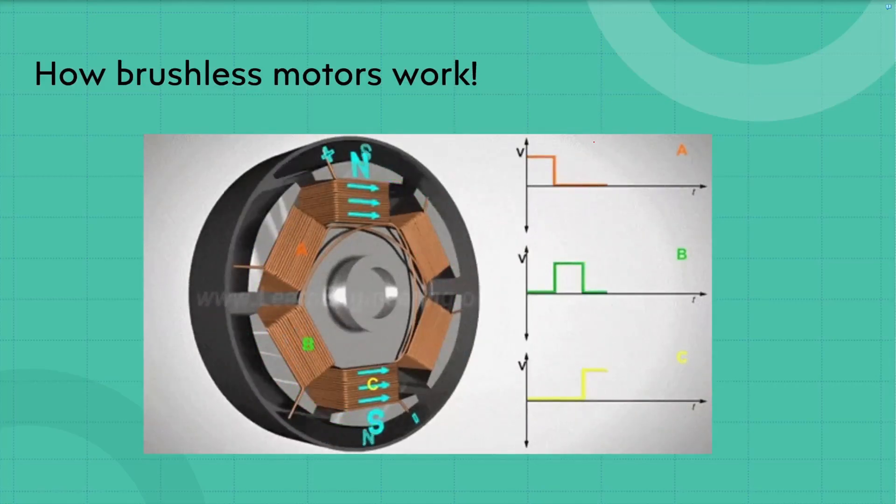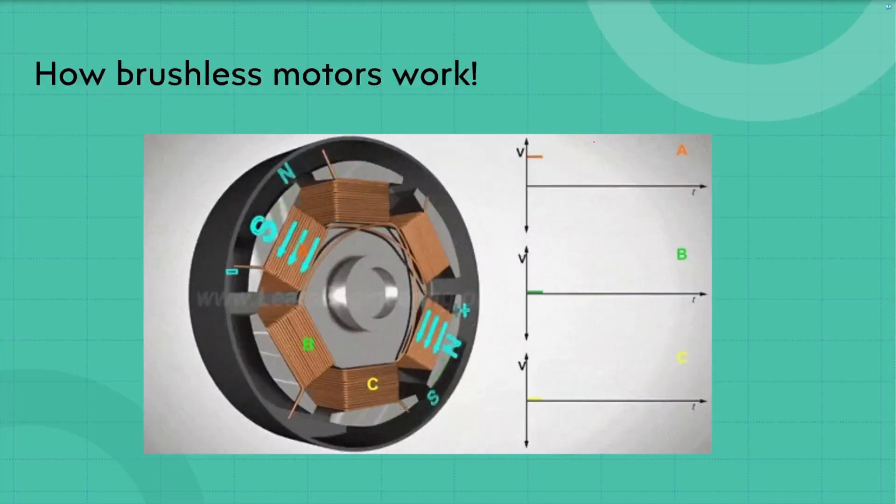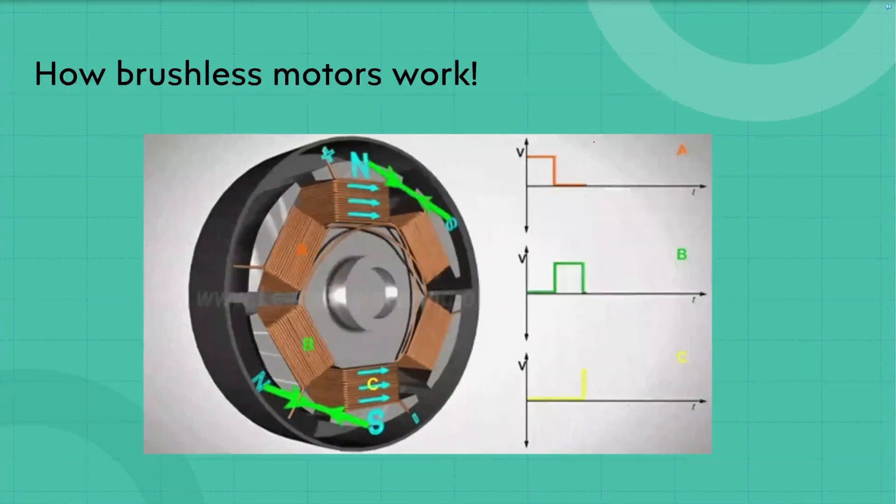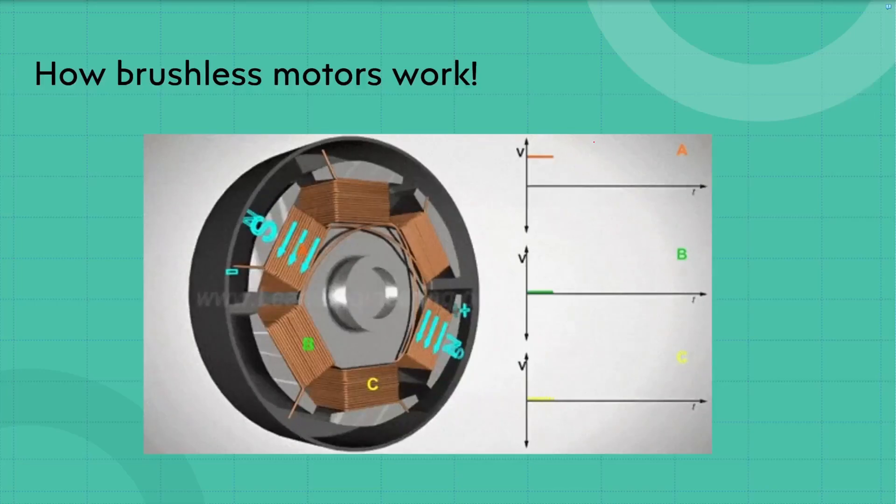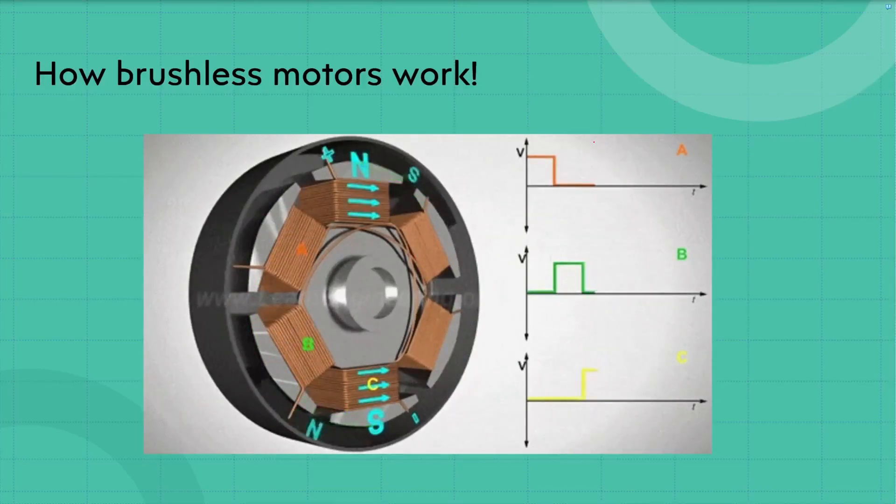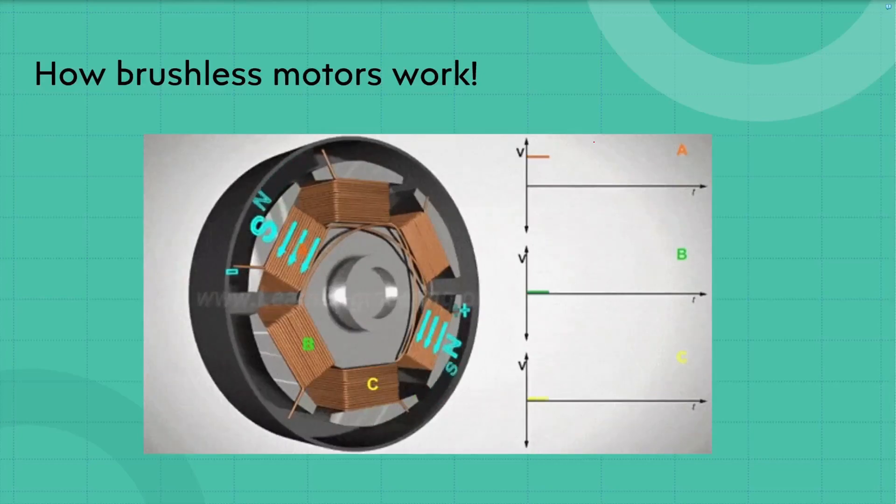Then it will turn B phase low. It won't send current through B phase anymore. And then it will turn C phase high. And then the rotor will align with the magnetic field of C phase. And then this will continue to repeat. And the faster you want to spin your rotor, the faster these pulses actually go.